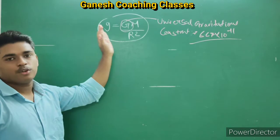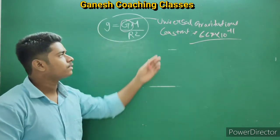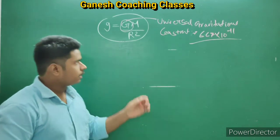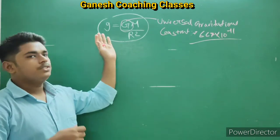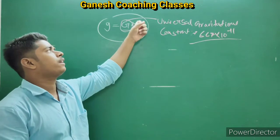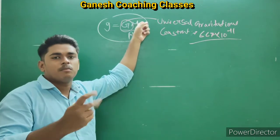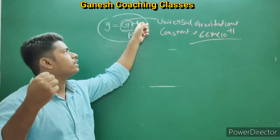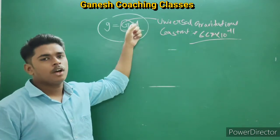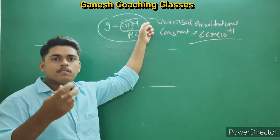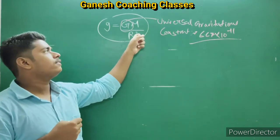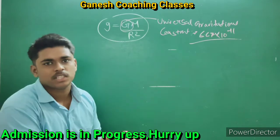From F = GMm/R², we can derive G. We also saw changes in g planet to planet. When we go to another planet, like Mars, the mass M and radius R will be different for Mars. So the value of g there will be different.